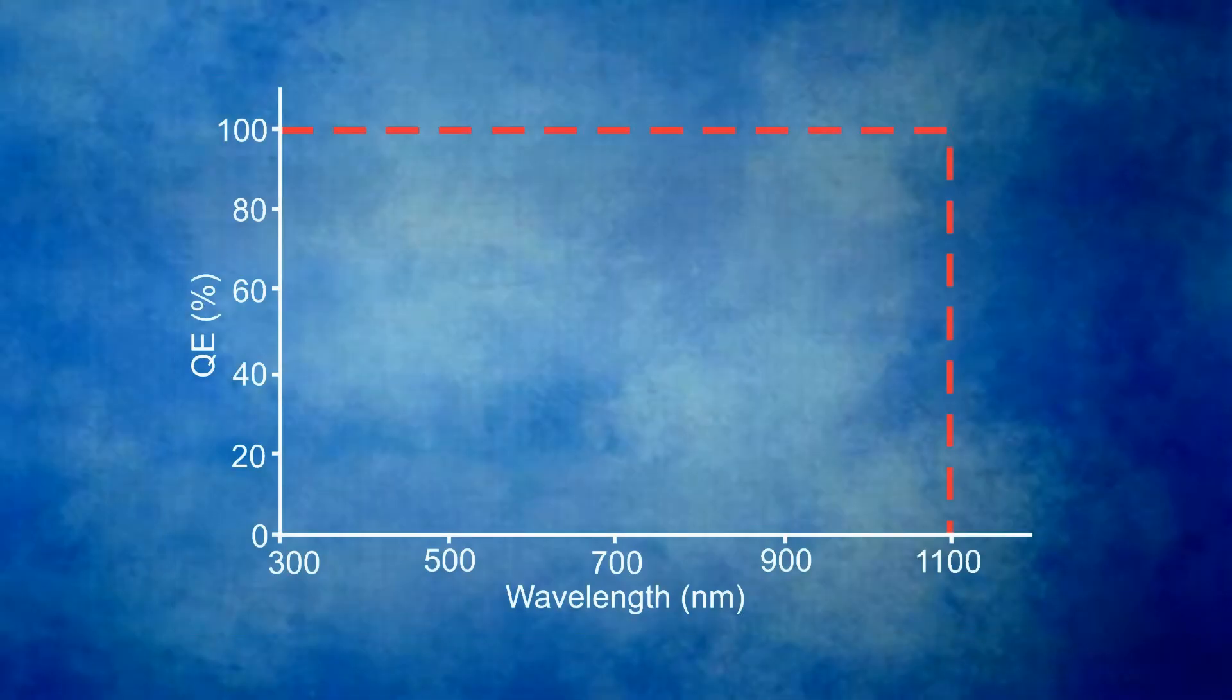Ideally what you want is that every incident photon creates an accumulated electron. As we discussed, this would be 100% quantum efficiency. This graph shows an ideal quantum efficiency versus wavelength, but you notice that it goes to zero at 1100 nm. That's because photons with wavelengths longer than 1100 nm do not have enough energy to excite an electron in silicon from the valence band into the conduction band.